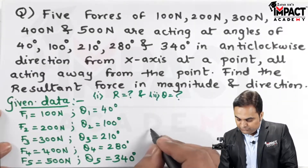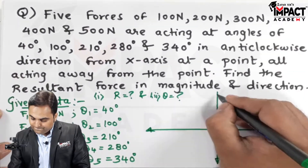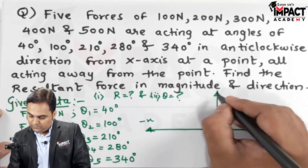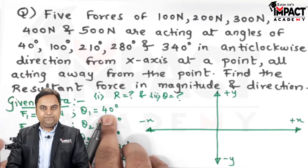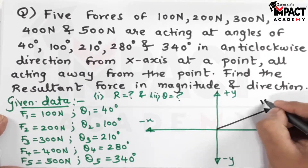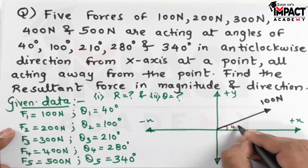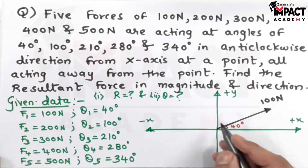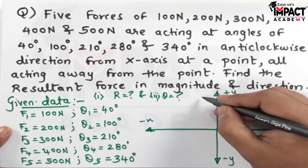First I'll draw the diagram. Here we have the plus x-axis, minus x, plus y, and minus y. The first force is 100 N at 40° with respect to the horizontal. The 200 N force is at 100° — that is 90° plus 10° beyond the vertical.